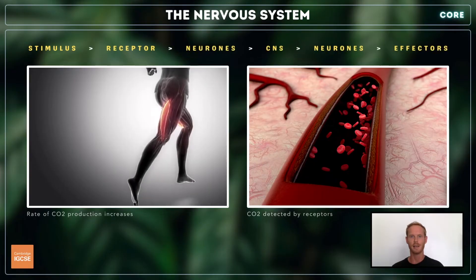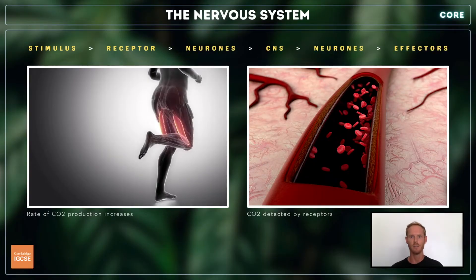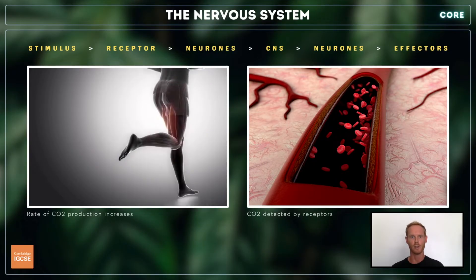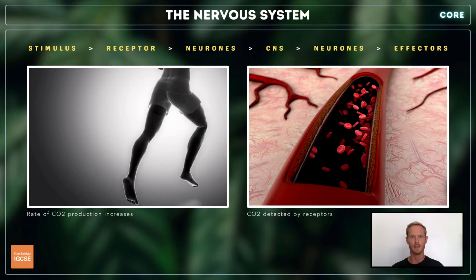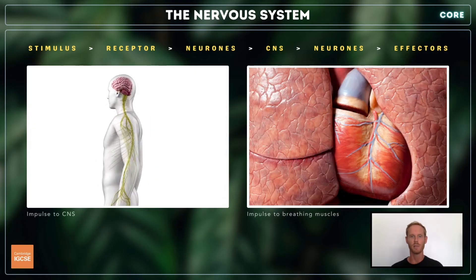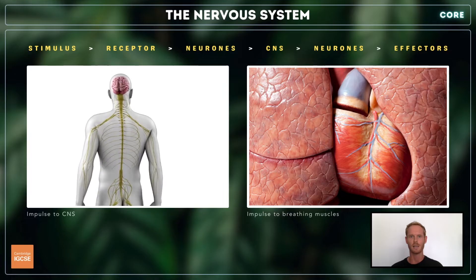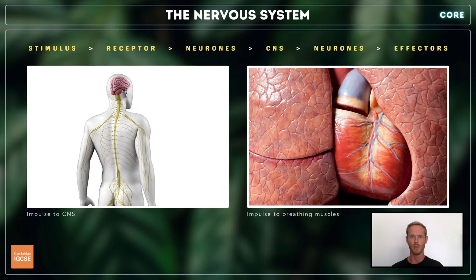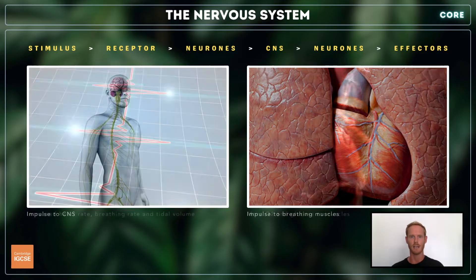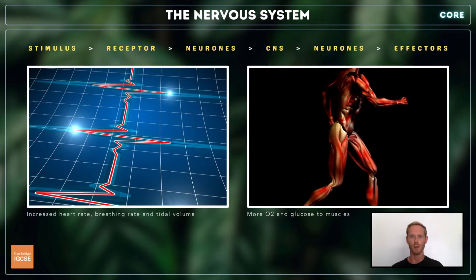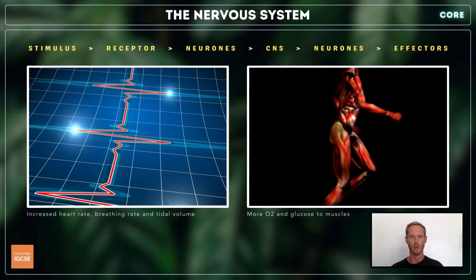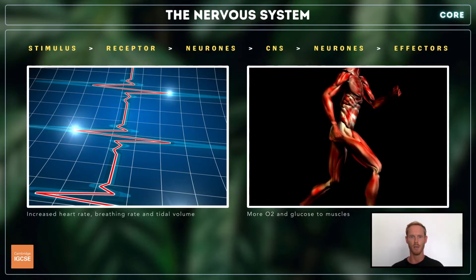For example, when we begin to exercise, the rate of respiration in the muscles goes up and carbon dioxide accumulates in the cells and blood. This is detected and impulses are sent to the brain which stimulates the heart and breathing muscles to contract more rapidly and forcefully. As a result both heart rate and breathing rate increase, supplying the additional oxygen and glucose needed by the muscles.